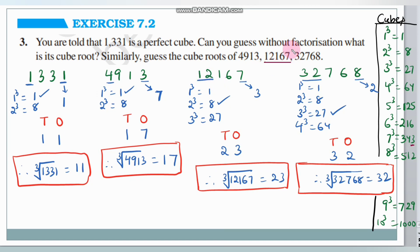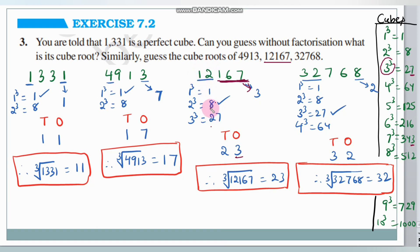Next, 12,167. The ones place digit is 7. Since 3 cube is 27, which ends in 7, the ones place of the cube root is 3. Ignoring the last 3 digits, we have 12. Starting from 1: 1 cube is 1, 2 cube is 8, 3 cube is 27. Since 12 lies between 8 and 27, we take the smallest cube, which is 8 — that is 2 cube. So the tens place is 2, and the cube root of 12,167 is 23.